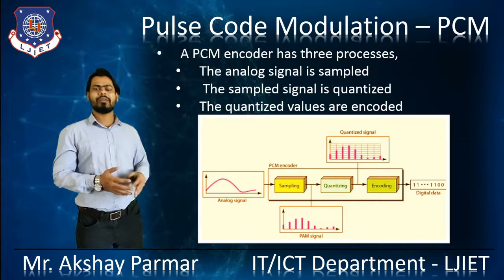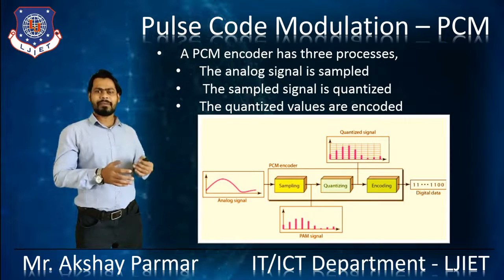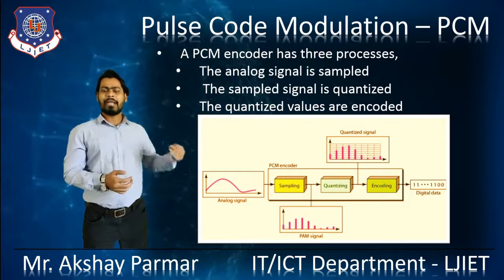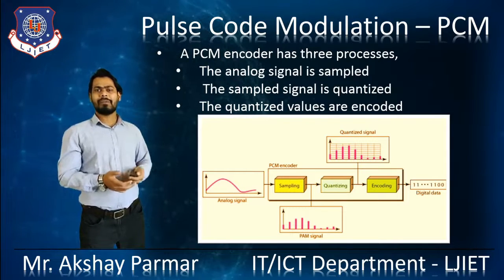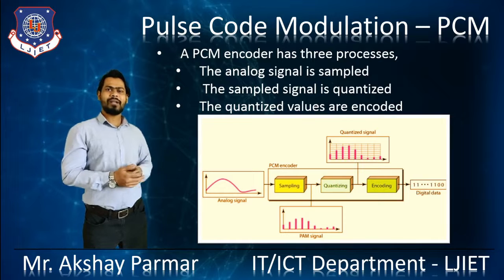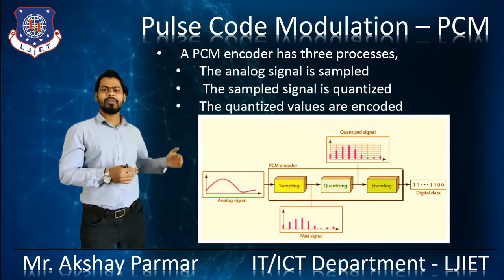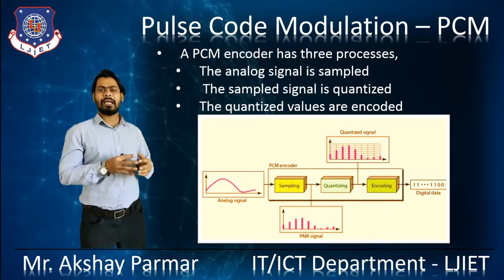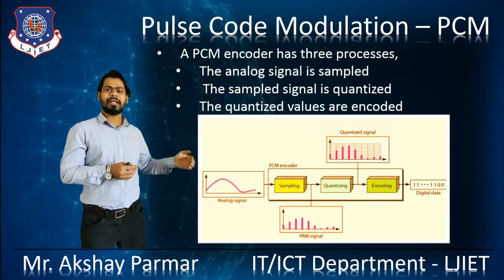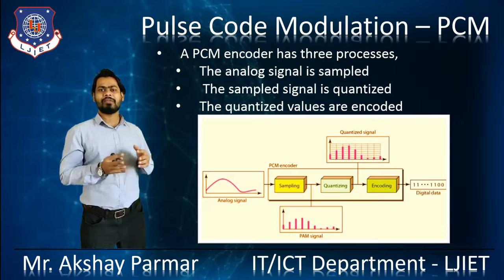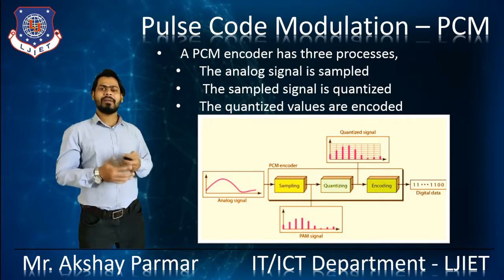In the PCM encoder there are three modules: Sampling, Quantization, and Encoding. Whenever we insert an Analog Signal into the PCM encoder, the signal reaches the sampling stage where the Analog Signal is sampled. After that, the sampled data is given to the quantizer where the signal is quantized. After quantization, the quantized values are encoded — and that's how we get the digital signal from the Analog Signal.